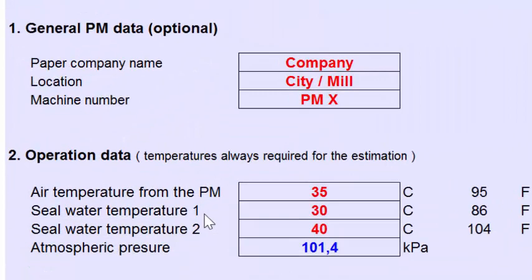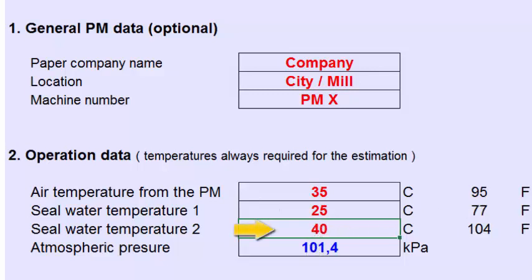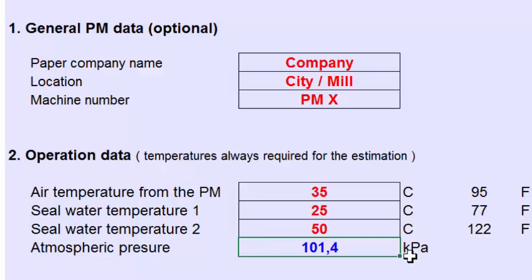The seal water temperature can be given in two different operating conditions. Let's calculate two different situations: one where the seal water temperature is 25 degrees Celsius (77 Fahrenheit), and another where this temperature is very high — let's say 50 degrees Celsius, which equals about 122 Fahrenheit. Let's also suppose that this mill is situated more or less at sea level, so we have normal atmospheric pressure around the vacuum pumps.